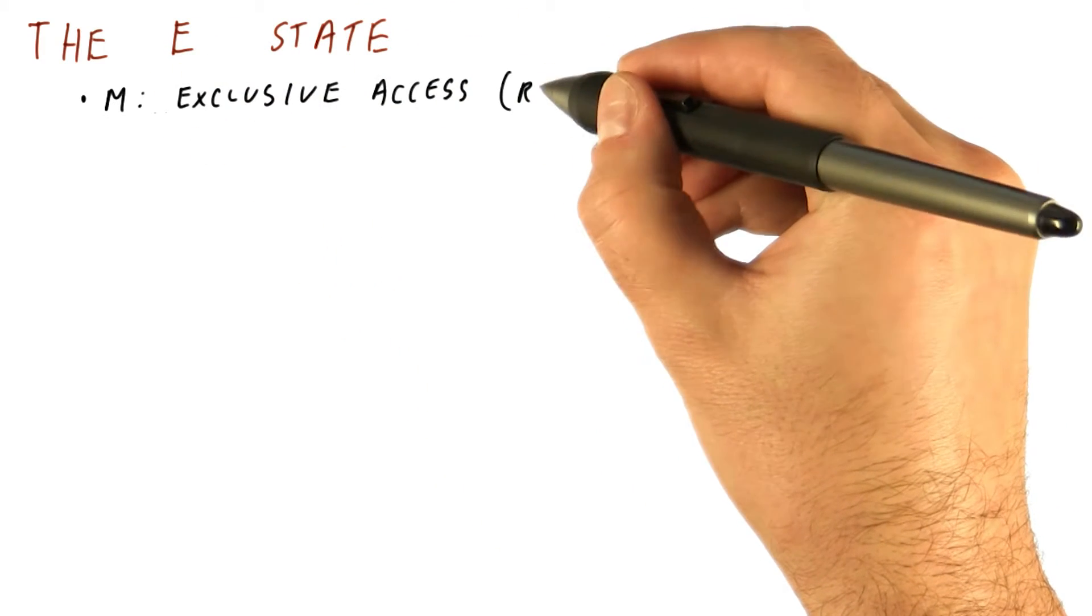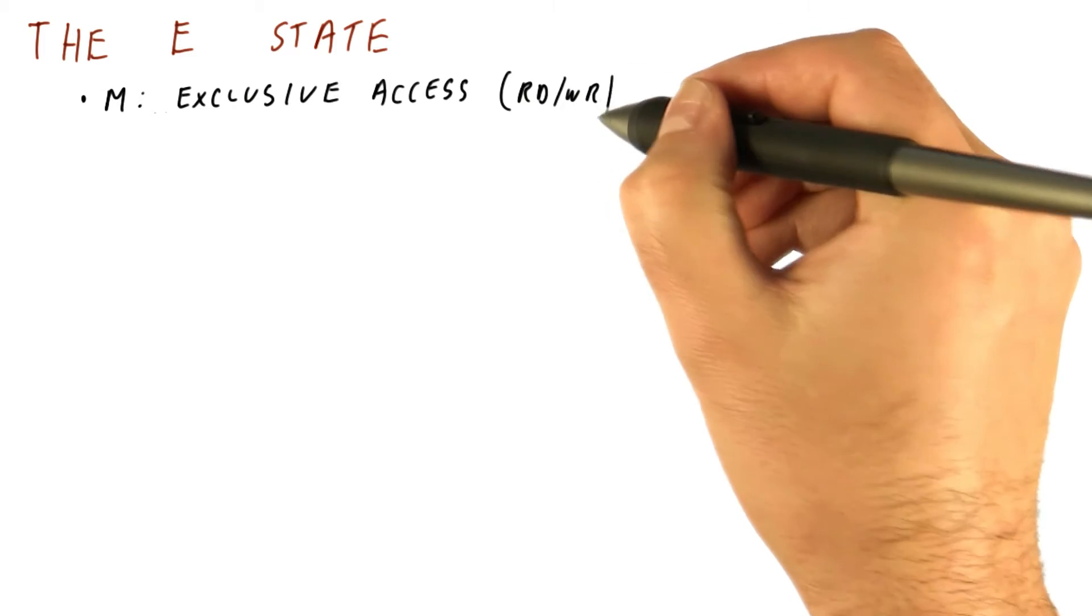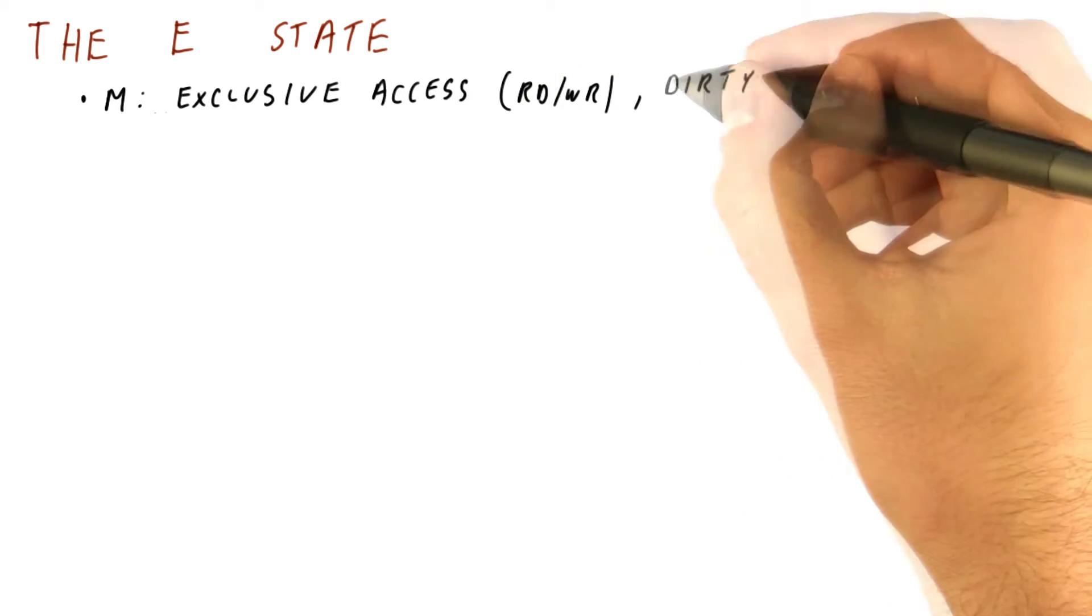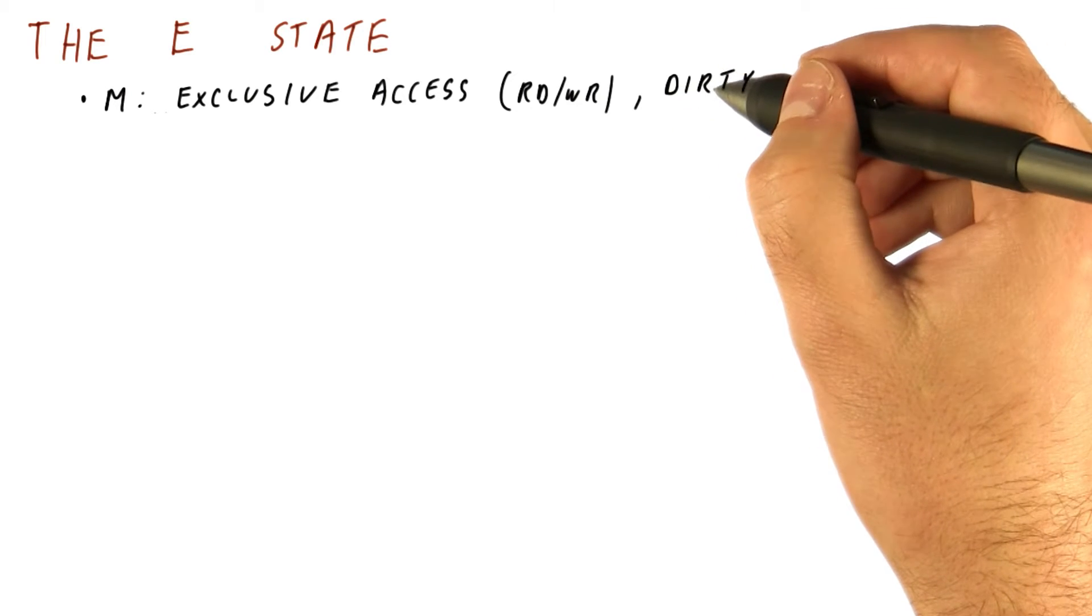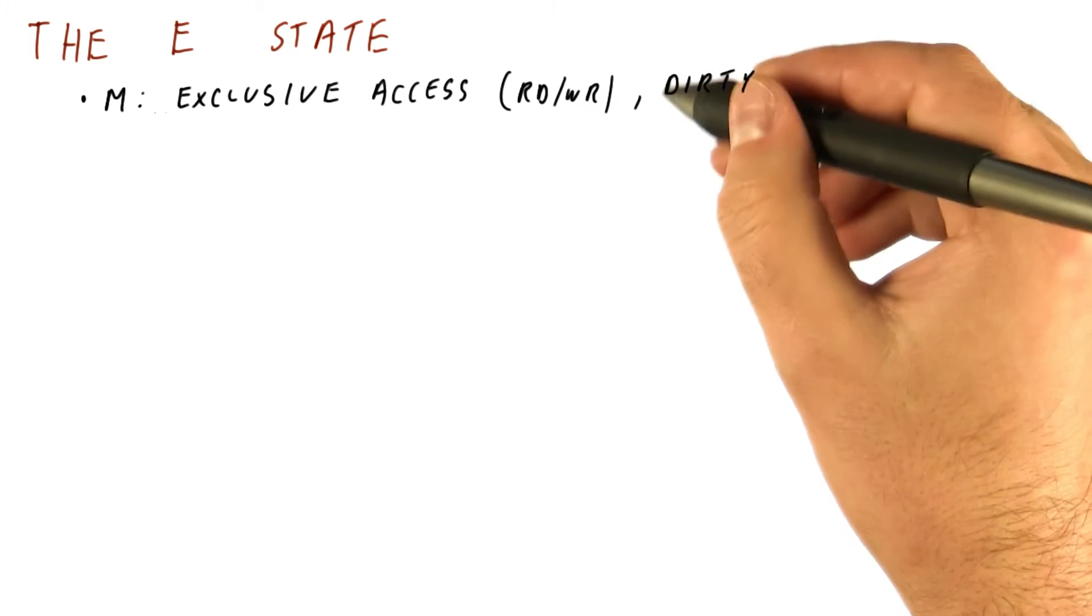So what does the E state do? The M state gives us exclusive access so we can both read and write and makes us the owner of a dirty block so that we have to respond with the data and also update memory.